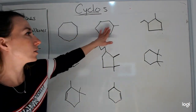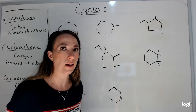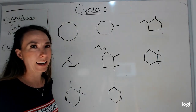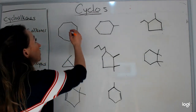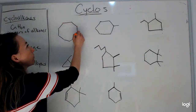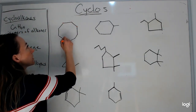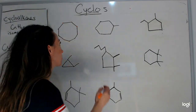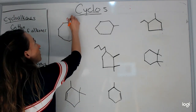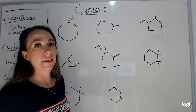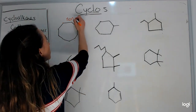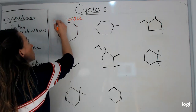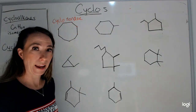Naming cycloalkanes is not that hard. Here we have 9 carbons in a circle. How do we say 9 in organic chemistry? We say 'non.' These are all singly bonded, so this is 'nonane,' and they're in a circle, so: cyclononane.